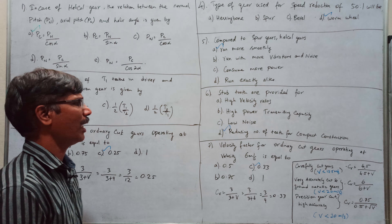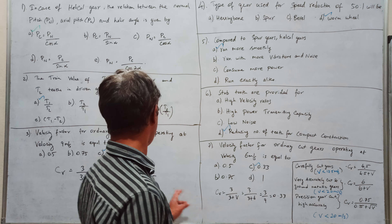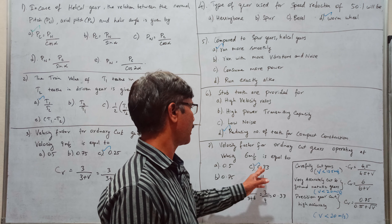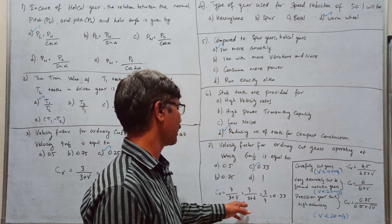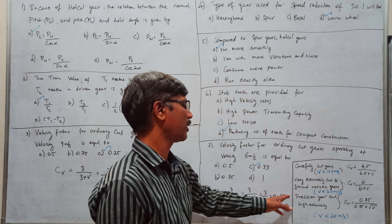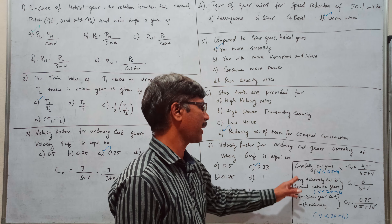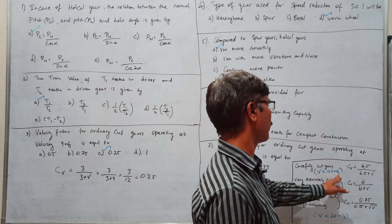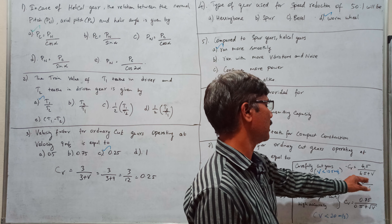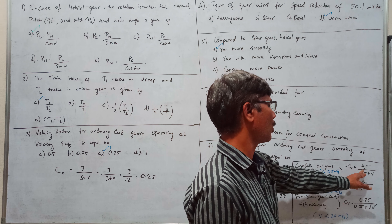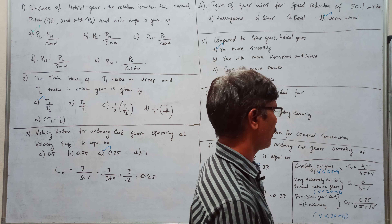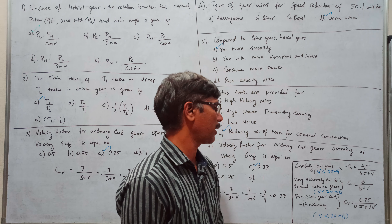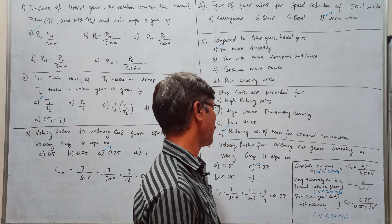The velocity factor for ordinary cut: if velocity is 6 meters per second, then R is 0.33. If velocity is less than 12.5 meters per second, then the velocity factor is 4.5 divided by 4.5 plus V — carefully cut, accurately cut.